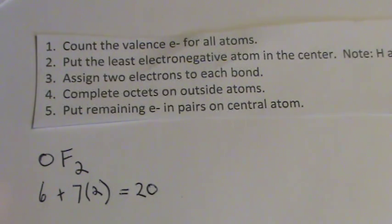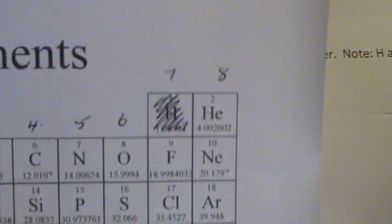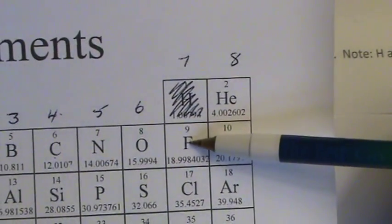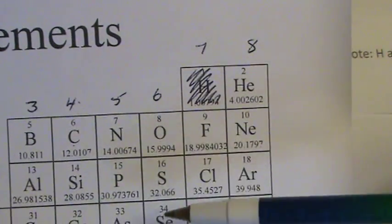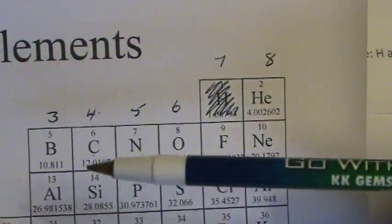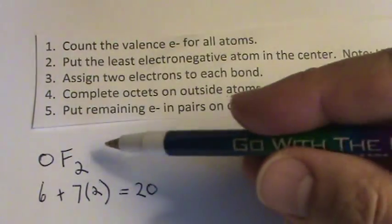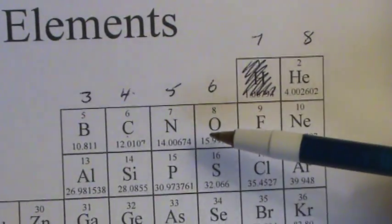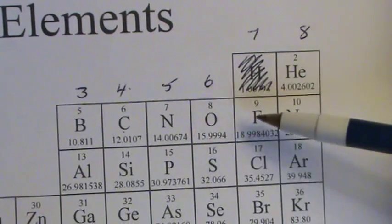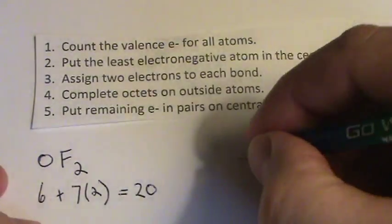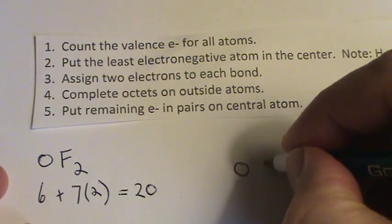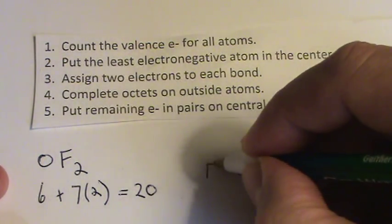Here they want us to put the least electronegative at the center. Fluorine, it turns out, is the most electronegative. So whatever is further away from fluorine, we're going to put at the center. And we're talking about oxygen here. So oxygen is over here. It's still pretty electronegative, but fluorine is the most. Oxygen is less. So let's put oxygen at the center. And then we can just put the fluorines on either side. That works.